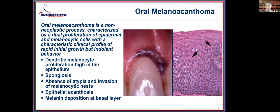Oral melanoacanthoma is a non-neoplastic process characterized by proliferation of both the epithelium and dendritic melanocytes, with a very rapid clinical onset even though it has indolent behavior. A lesion is seen immediately adjacent to the tooth going into the gingiva, showing remarkable rapid size increase over a short time. Histologically, there is a dendritic melanocytic proliferation extending into the upper reaches of the epithelium with spongiosis, but no nested pattern, no atypia, and no extension into the underlying stroma. Melanin deposition at the basal layer is typically present.